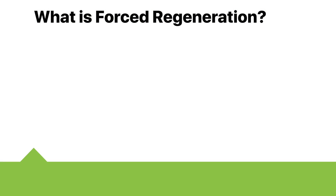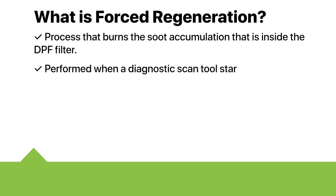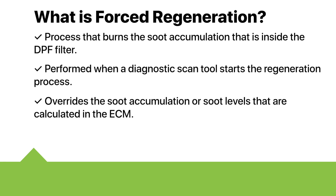What is forced regeneration? Regeneration, or regen, of the DPF filter is the process that burns the soot accumulation that is inside the DPF filter. Educating yourself on what a forced regeneration is and how it works will help you understand your after-treatment system better. A forced regeneration is performed when a diagnostic scan tool starts the regeneration process. The forced regeneration overrides the soot accumulation, or soot levels, that are calculated in the ECM. The DPF soot load could be too high for a passive or active regeneration to occur, causing the condition where it is required to perform a forced regeneration.